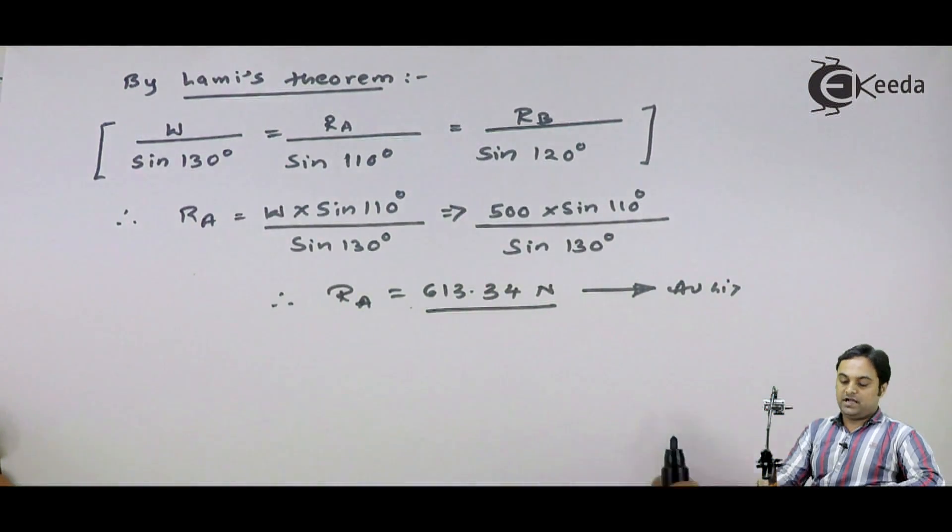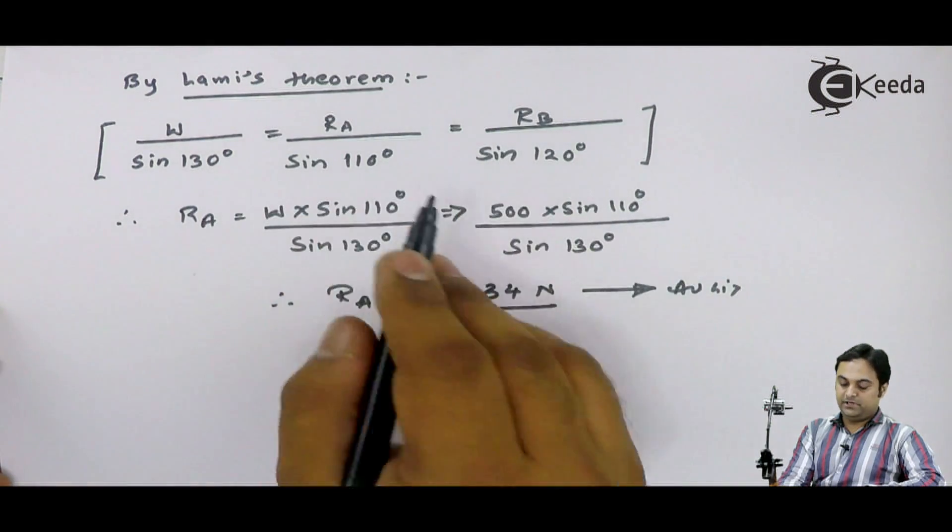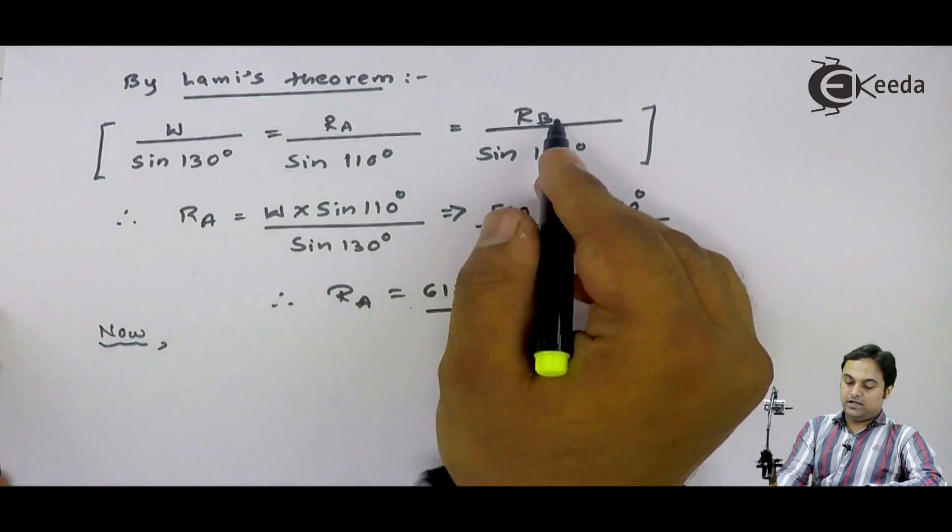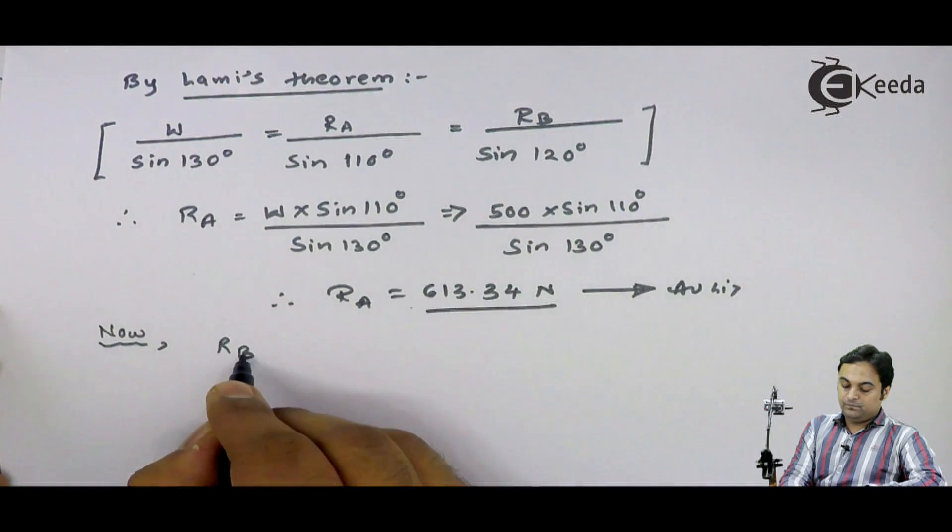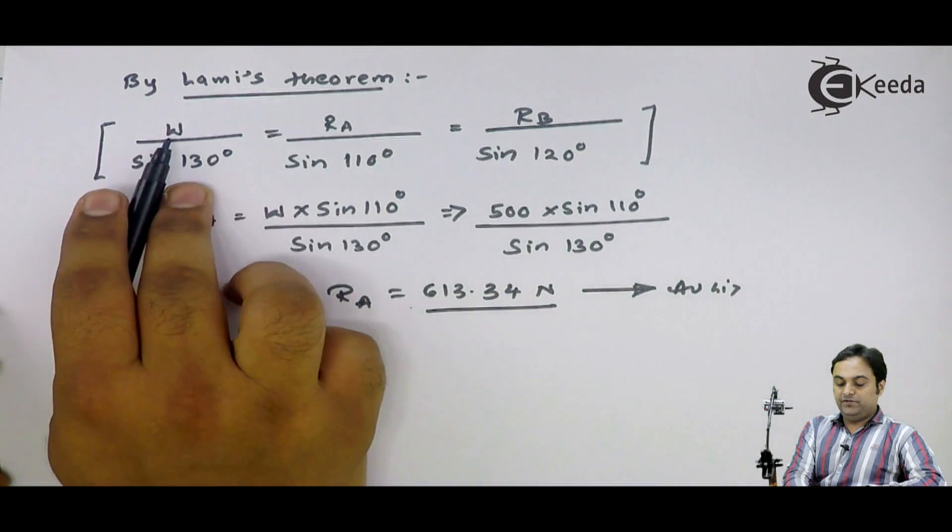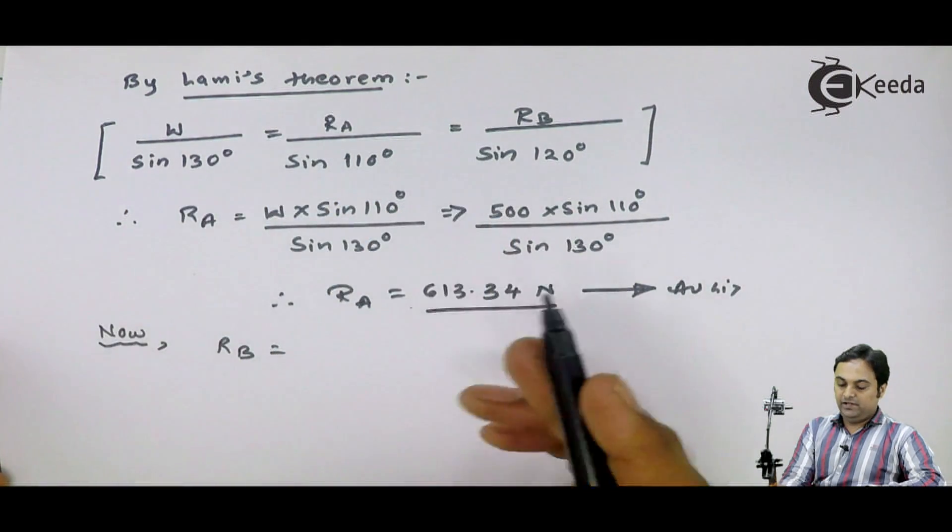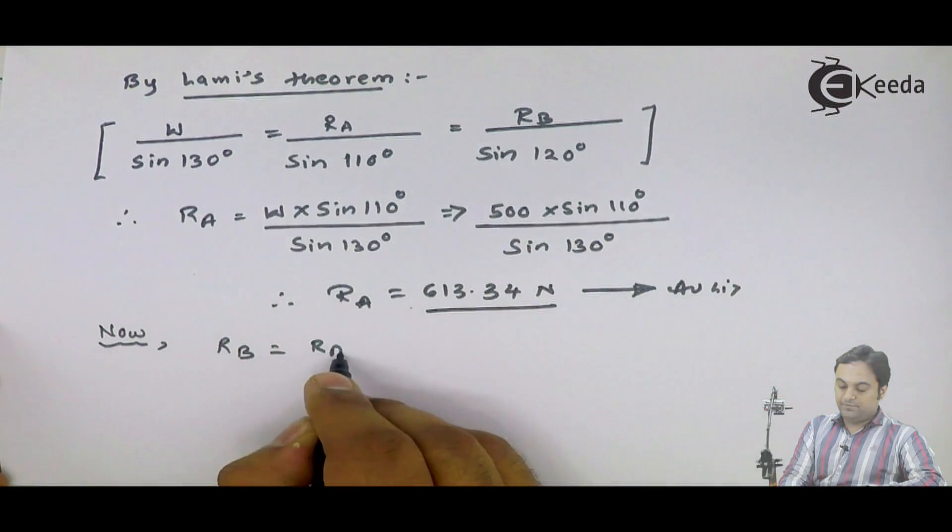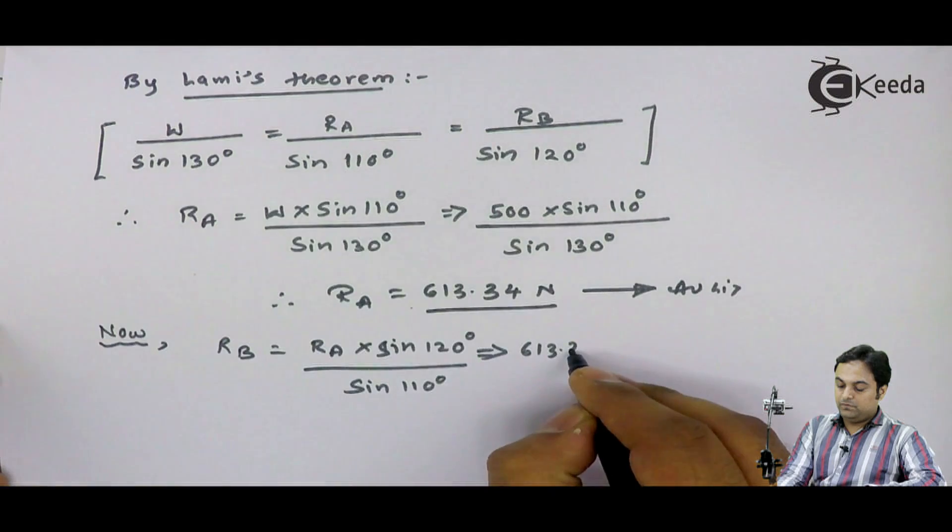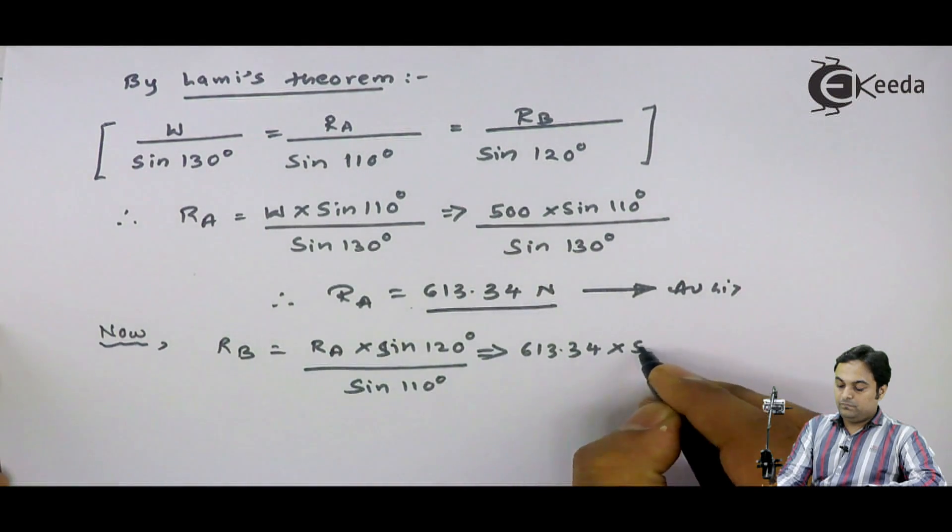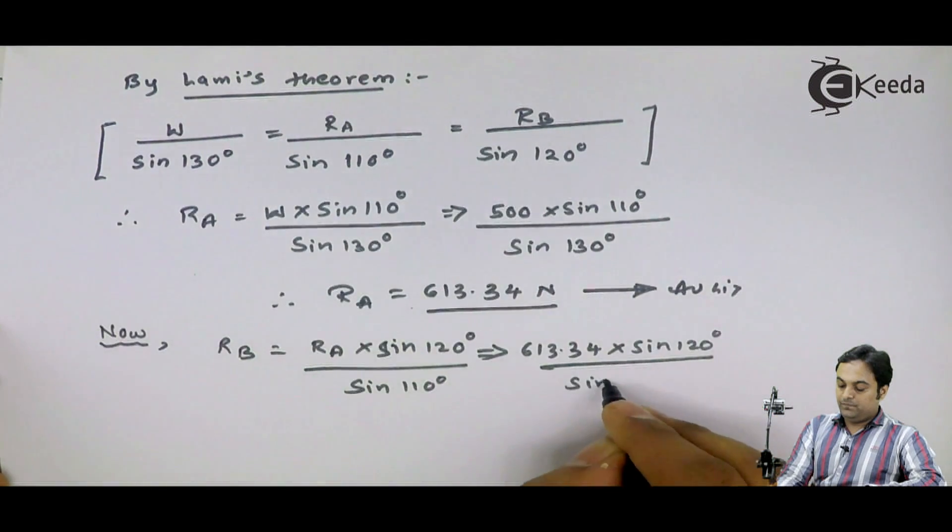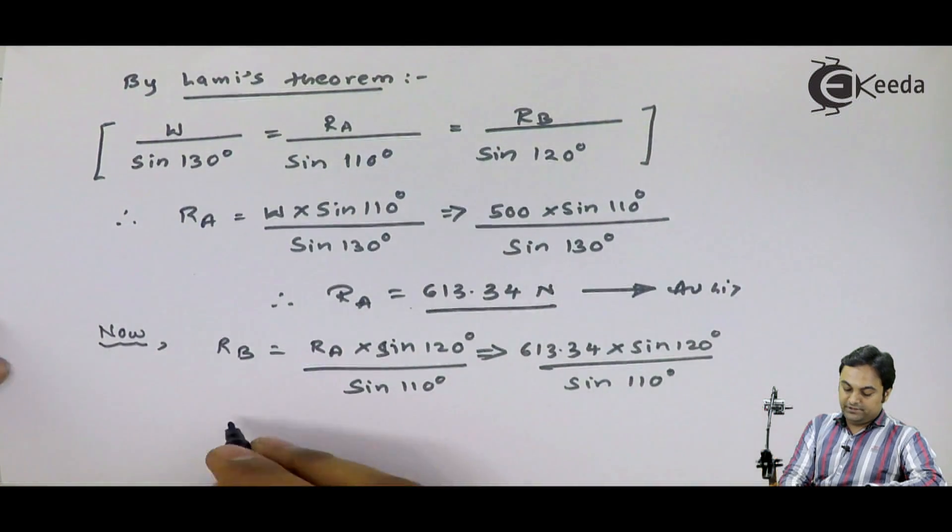After this, I can use again a similar part from Lame's theorem. I will say that RB is equal to RA into sin 120. If you want, you can even take it as W into sin 120, it will give you the same answer.